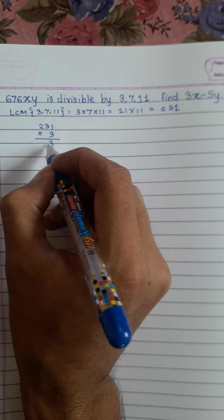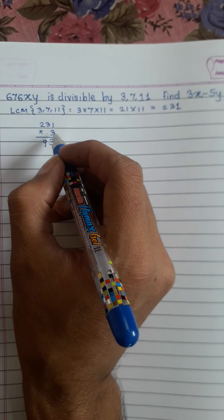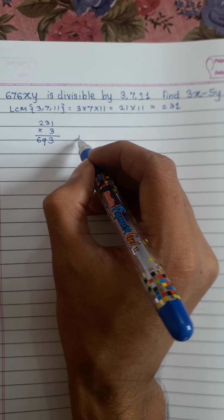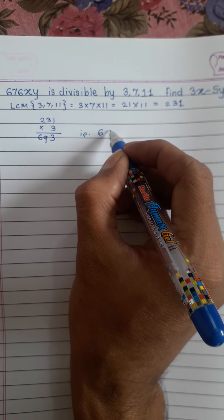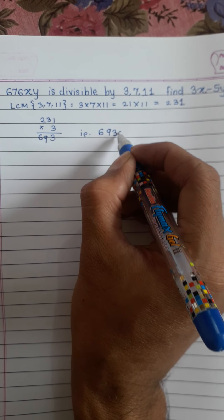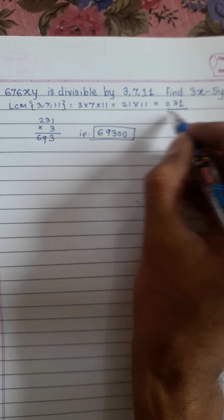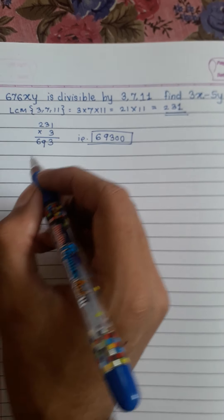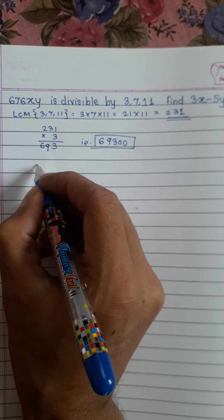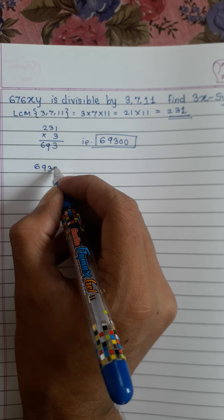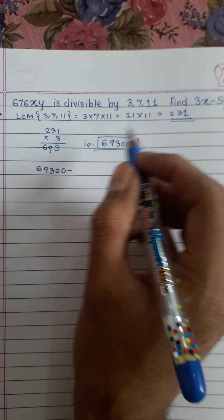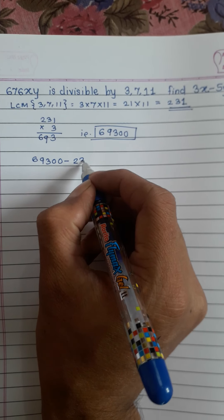is 233, this is 9, so it is 6, that is 6 9 3 double 0 is completely divisible by 231. Therefore, what we will do, we will write 6 9 3 double 0 minus multiple of